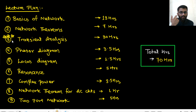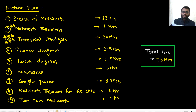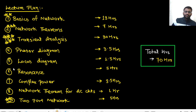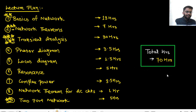Transient analysis is the most important topic — you can expect at least 4 marks from it in GATE. Network theorems are also very important, basics of network is of course important, and two-port networks are also quite important. These topics will be covered in great depth. The complete course will be around 70 hours.